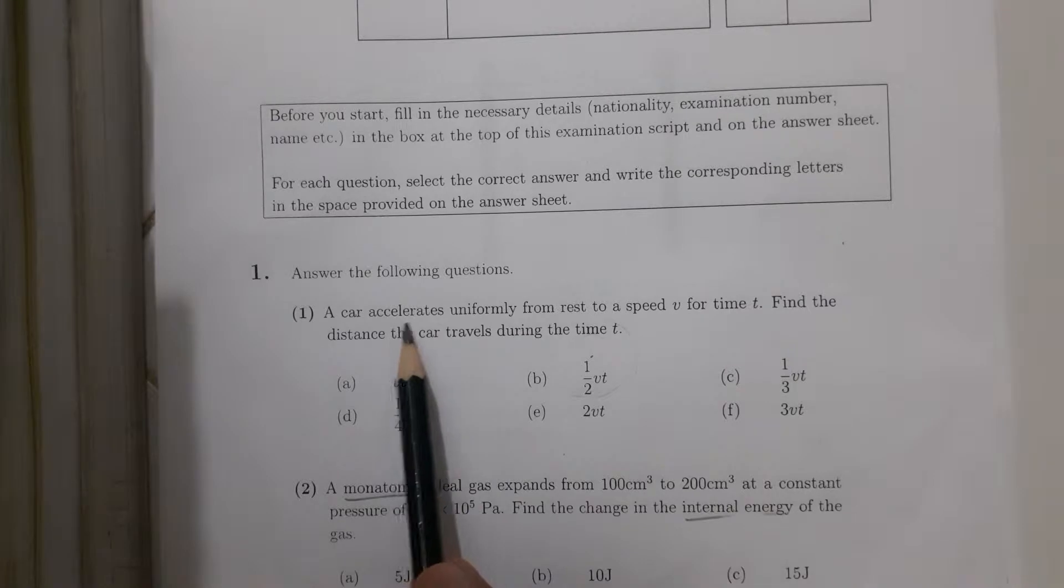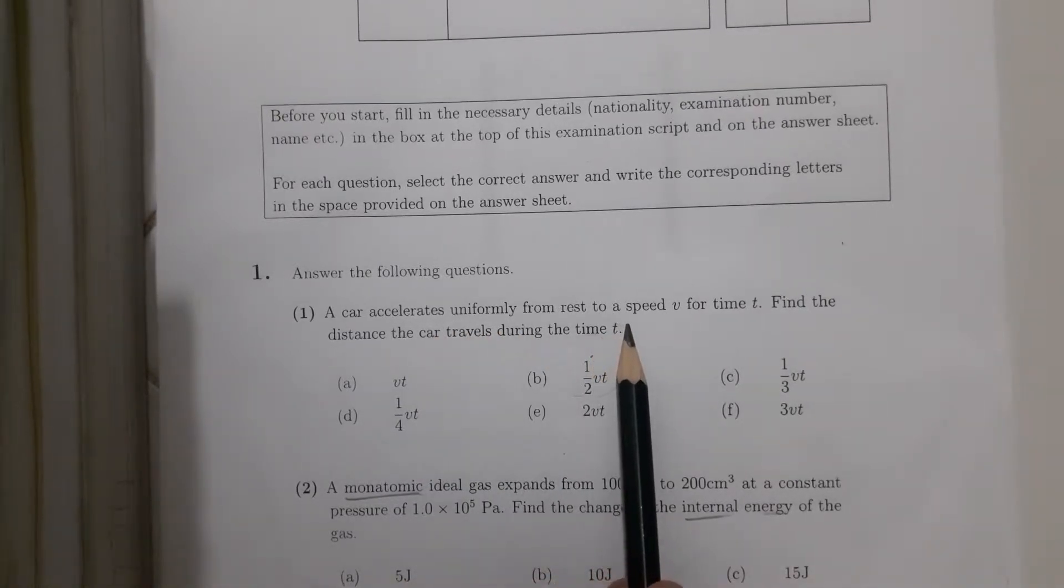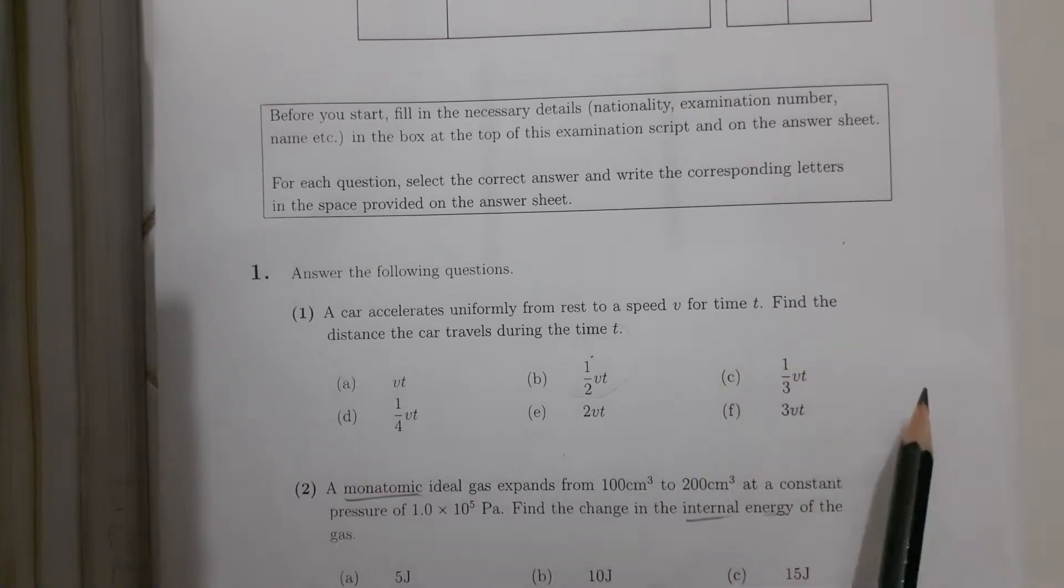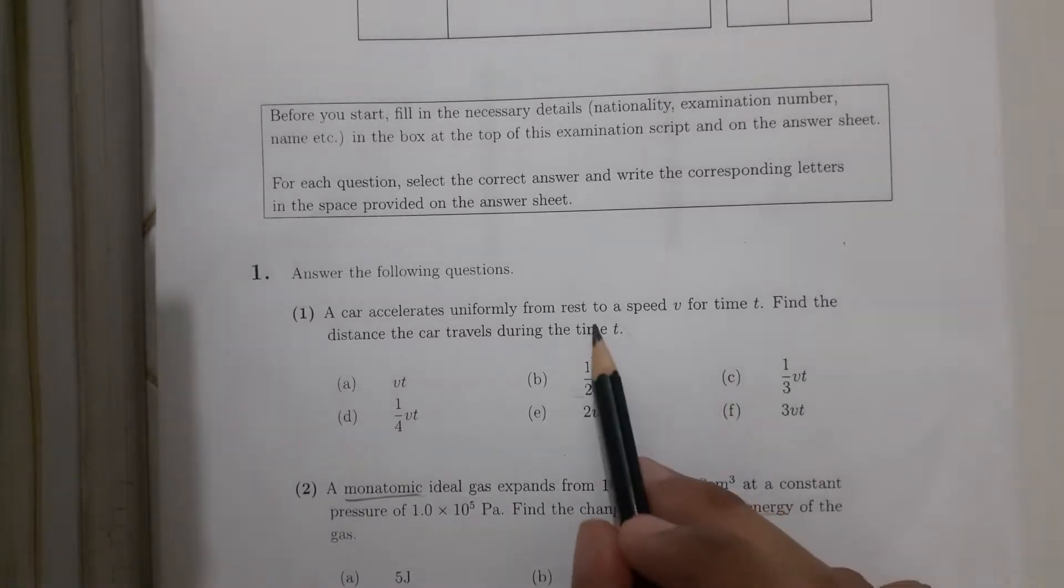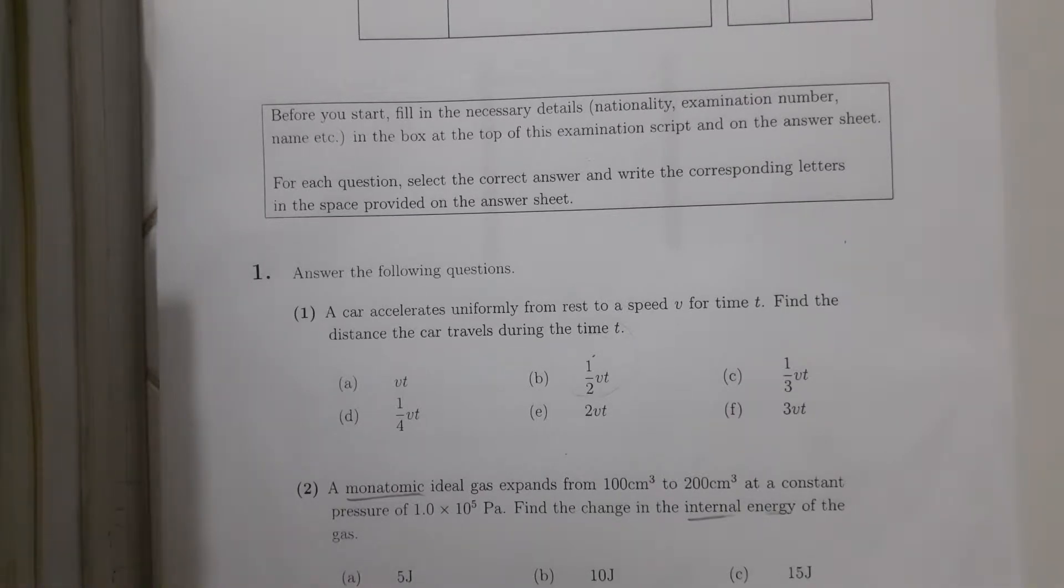A car accelerates uniformly from rest to a speed v for time t. Find the distance the car travels during time t. So at this particular question, it's actually discussing the basic kinematics. Because it goes from rest to a speed v, we can actually find it using the basic formula for kinematics.